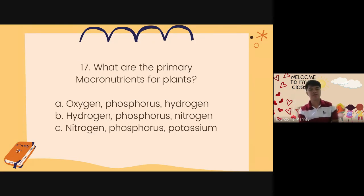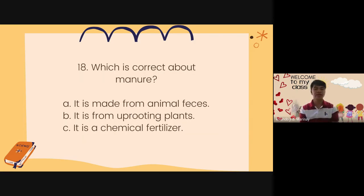Number 17. What are the primary macronutrients for plants? A. Oxygen, phosphorus, hydrogen. B. Hydrogen, phosphorus, nitrogen. Or C. Nitrogen, phosphorus, potassium. Number 18. Which is correct about manure? A. It is made from animal feces. B. It is made from uprooting plants. Or C. It is a chemical fertilizer.